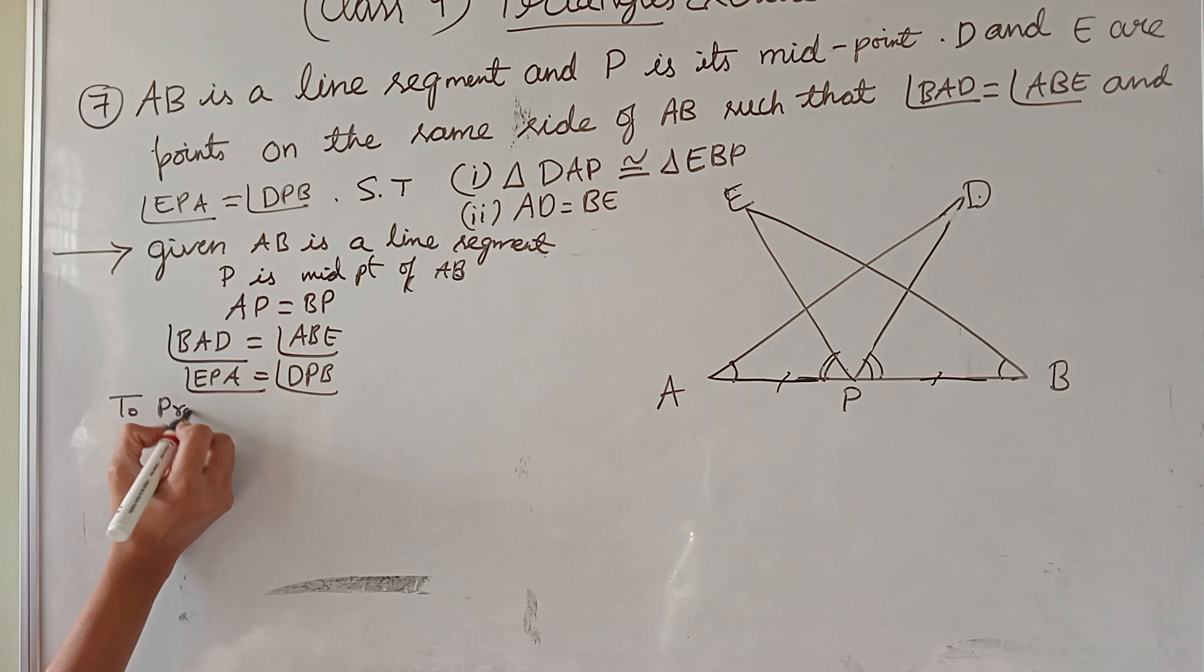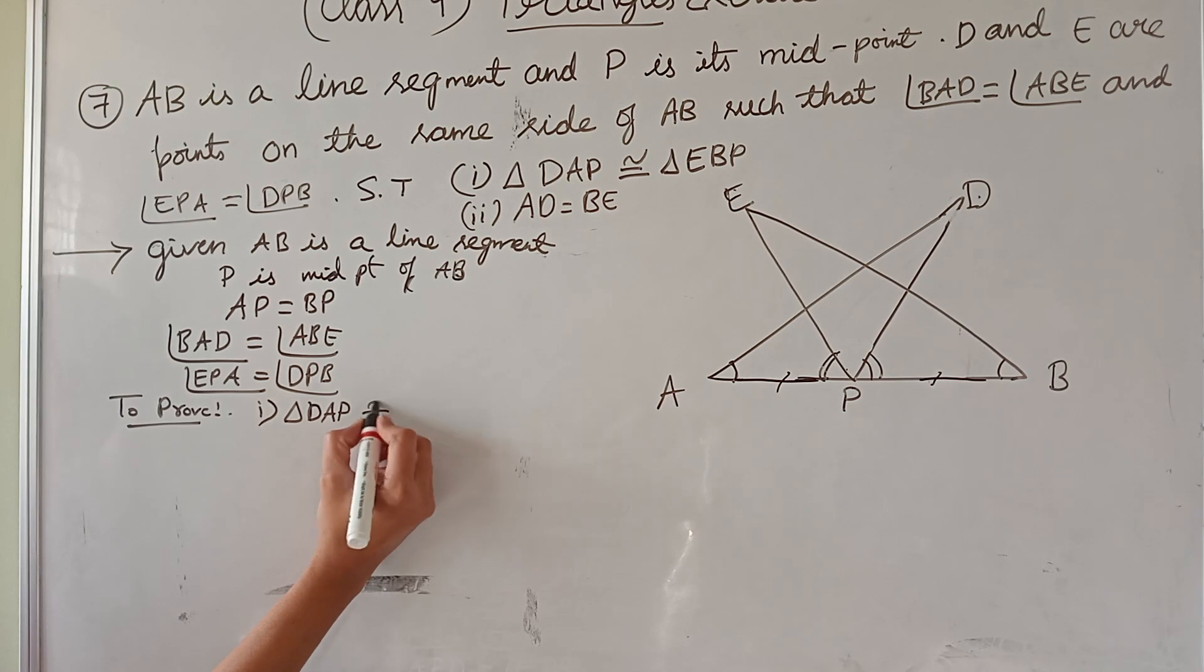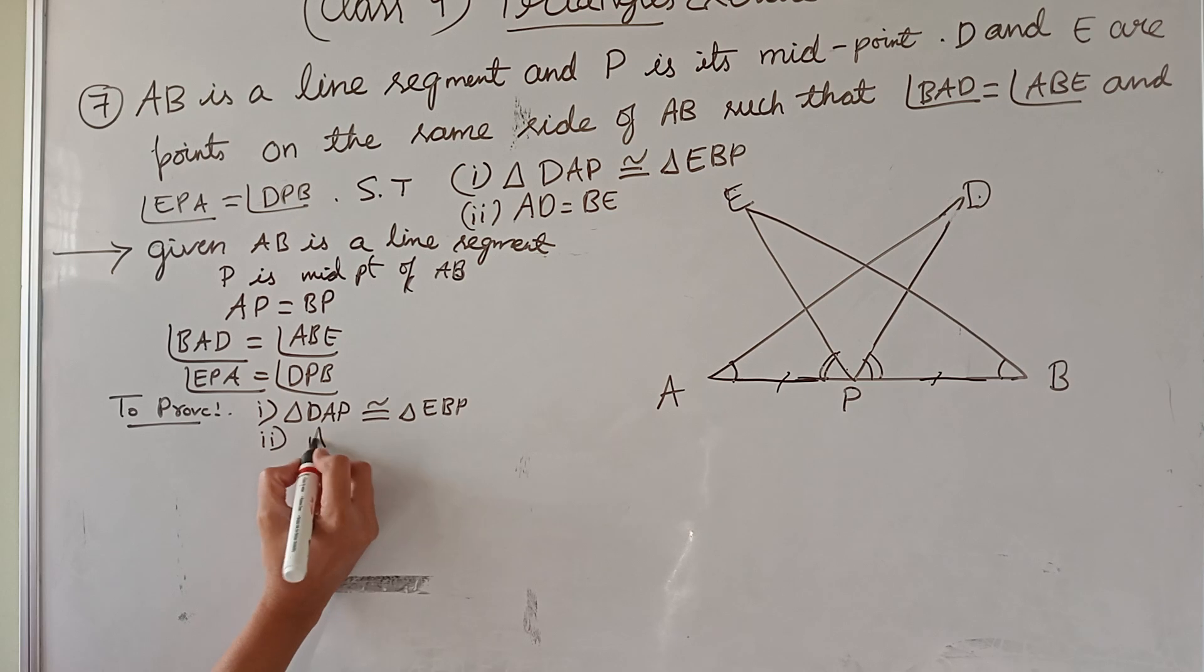To prove, first one: triangle DAP is congruent to triangle EBP. Second one: AD equal to BE.